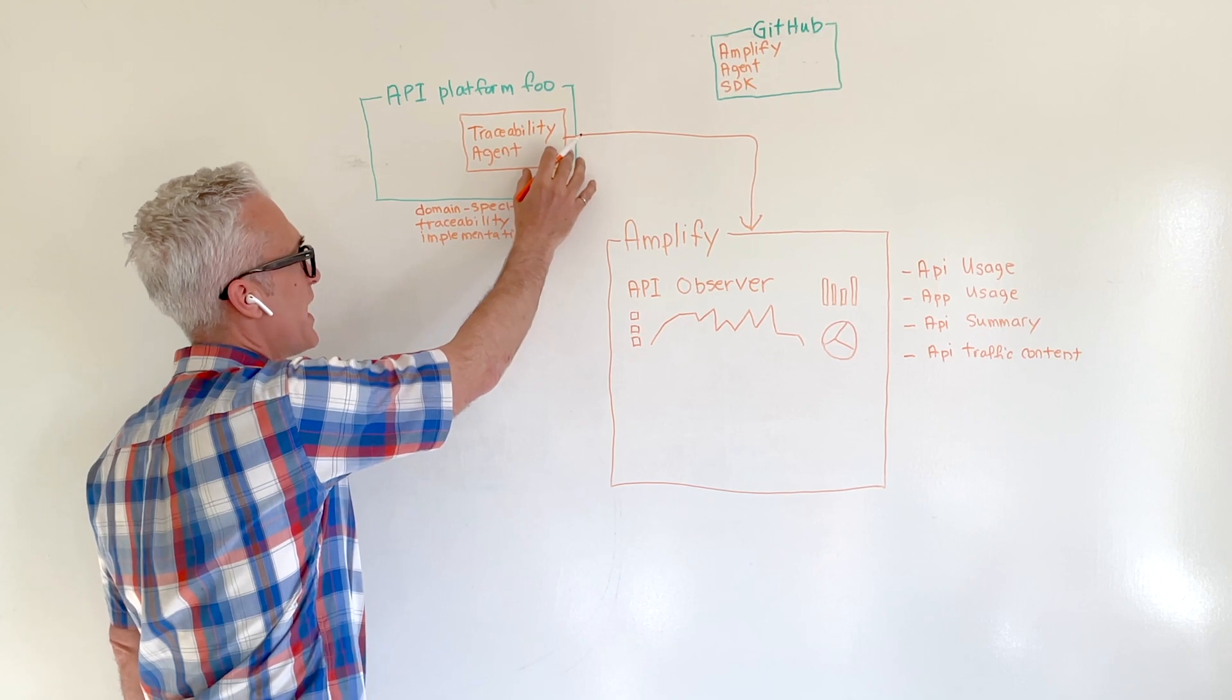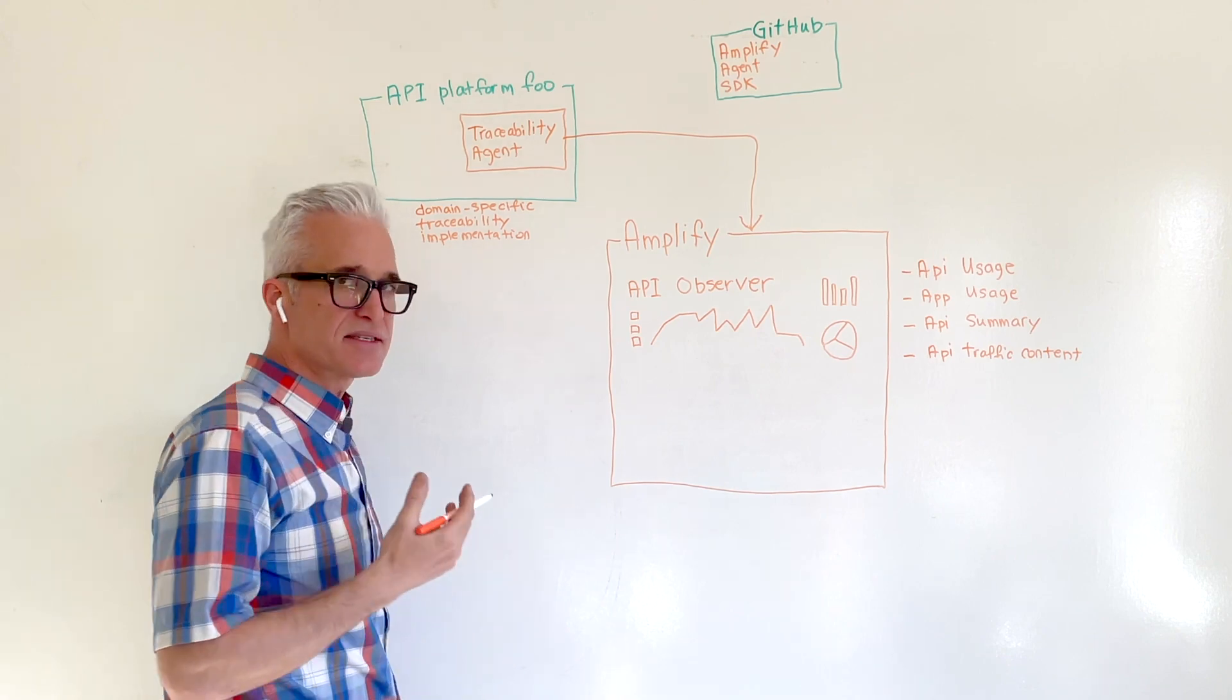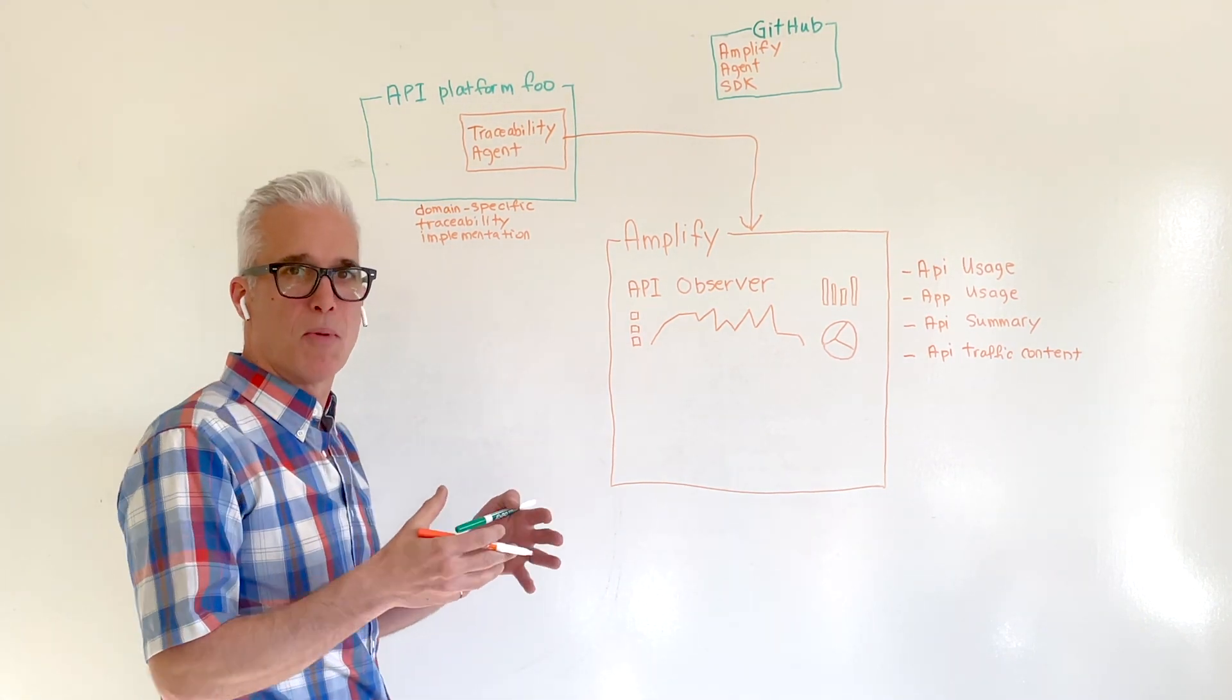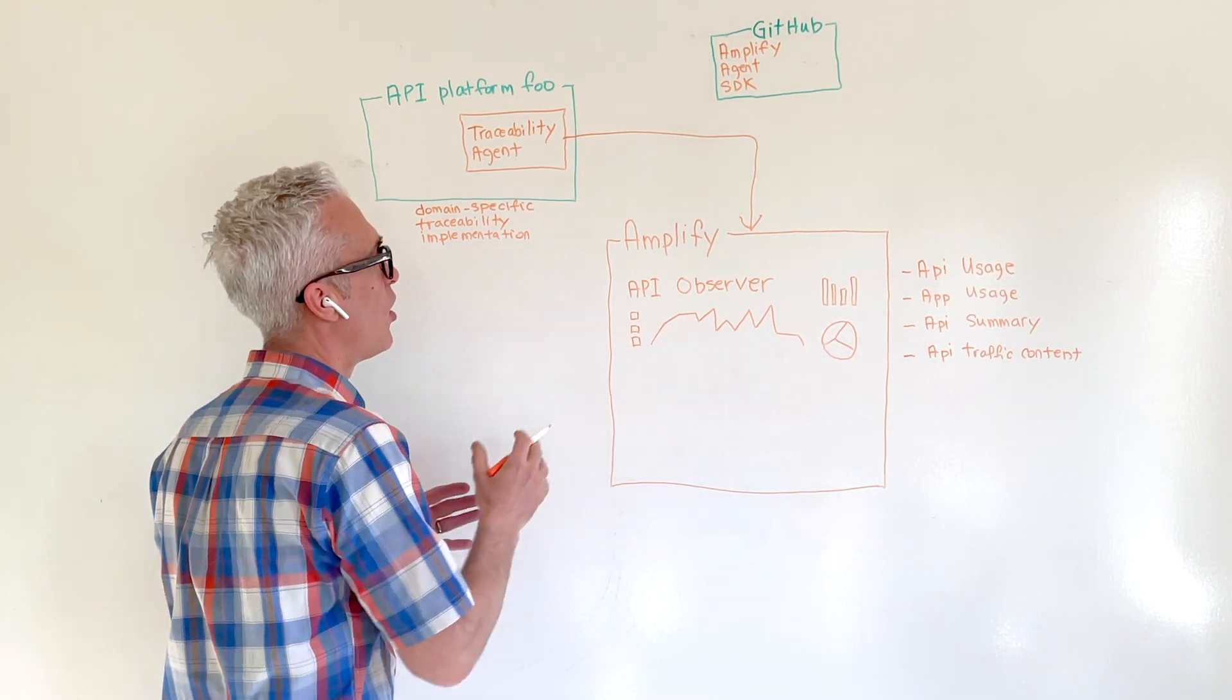So these traceability agents are domain-specific traceability implementations. That's important because different environments will have their own specific, most efficient way of capturing the API traffic to be sent onto Observer.